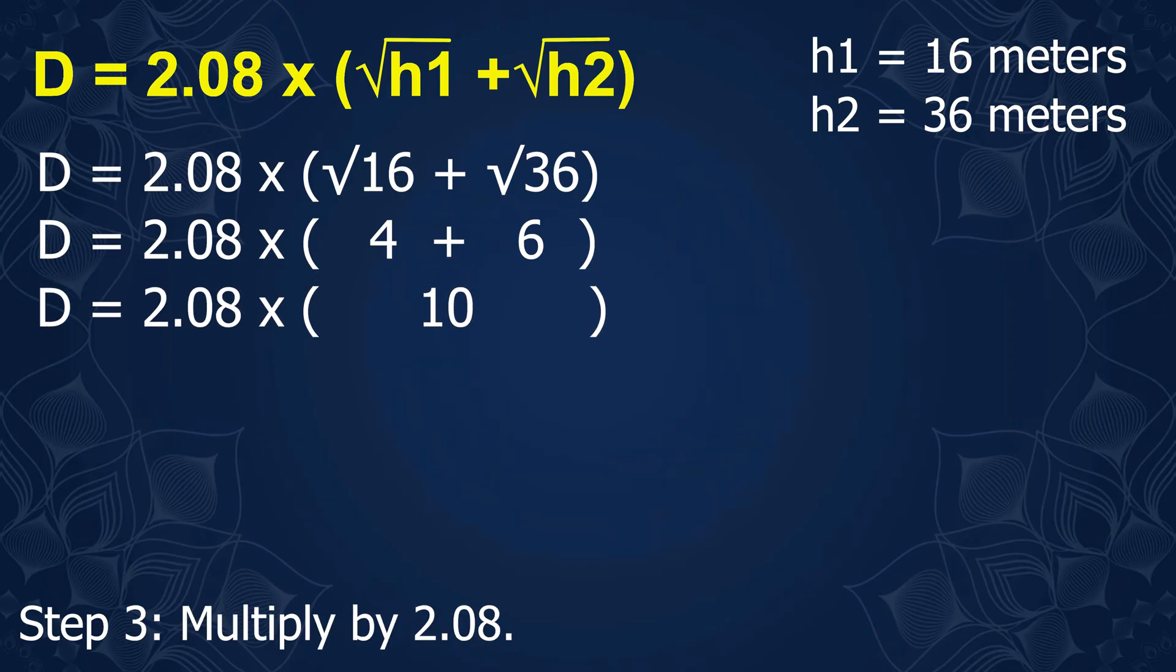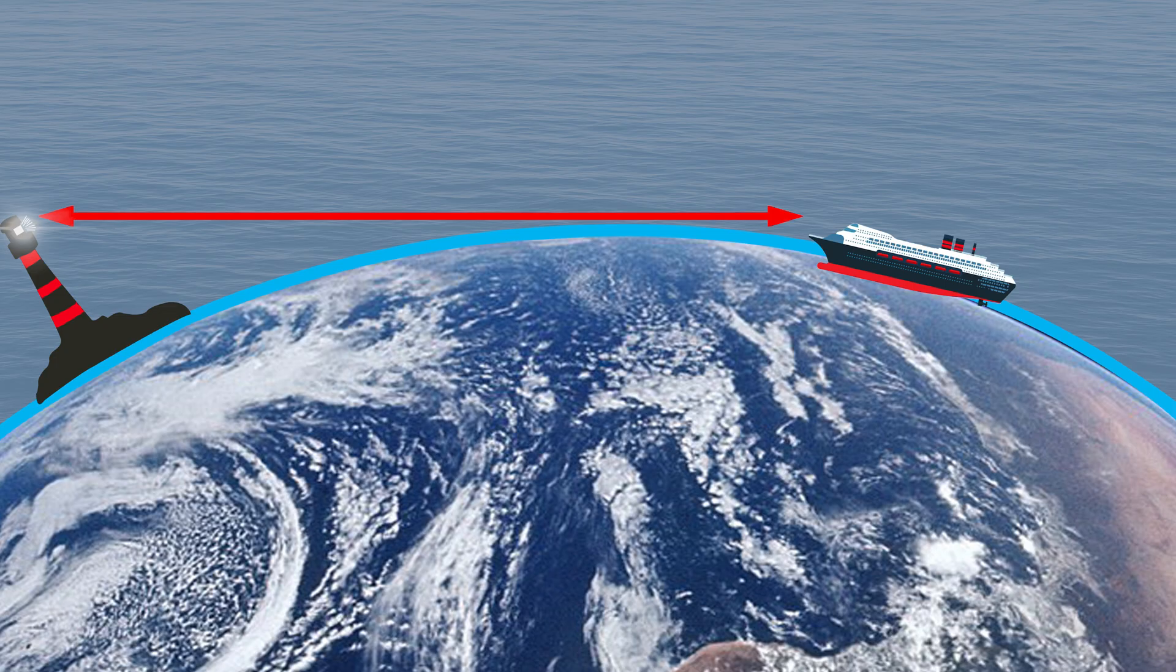Step 3. Multiply the result by 2.08. D equals 2.08 times 10, which is approximately 20.8 nautical miles. This means the lighthouse will just become visible when the vessel is within 20.8 nautical miles.